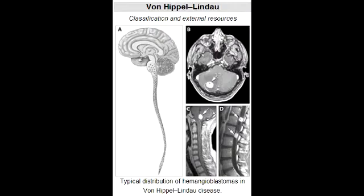The types of benign and malignant tumors that can arise include cavernous hemangiomas in the skin, mucosa, and other organs, along with bilateral renal cell carcinoma, as well as hemangioblastoma in the retina, brainstem, and cerebellum.